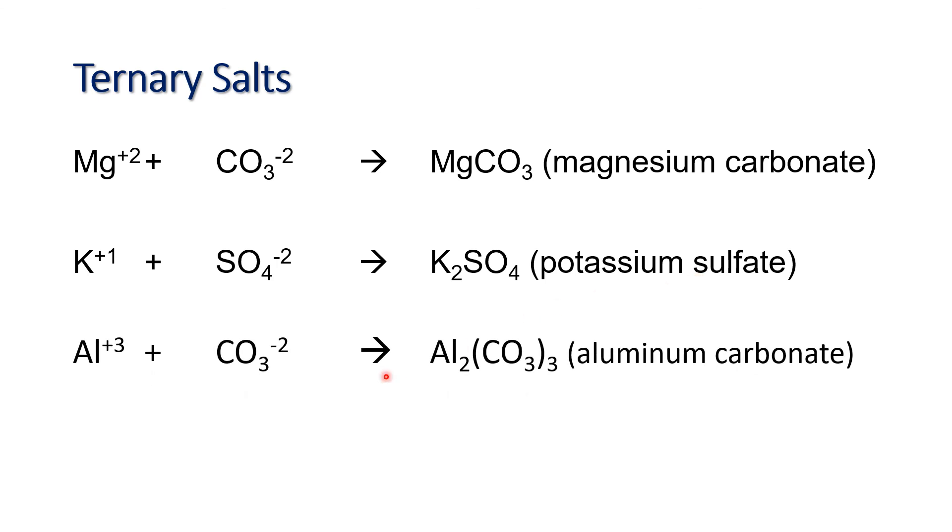And then lastly, let's say we have aluminum, which has a charge of +3 combined with carbonate, -2. The numerical value of 2 of the charge of carbonate will become the subscript of aluminum, so we will have Al2. And then the numerical value of 3 from the charge of aluminum will be the subscript of the entire polyatomic anion CO3. So it will now have a parenthesis to emphasize that the whole polyatomic anion will receive the subscript of 3 coming from the charge of aluminum. So we will now have Al2(CO3)3 or this is now what we call aluminum carbonate.